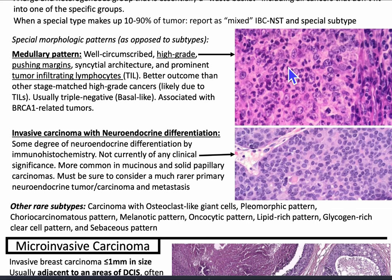Other special morphologic patterns include invasive carcinoma with neuroendocrine differentiation, which is also seen by IHC. Not currently of any clinical significance. It's more common in mucinous and solid papillary carcinomas, and you must be sure to consider a much rarer primary neuroendocrine tumor, carcinoma, and/or metastasis. The histologic features of neuroendocrine differentiation include salt-and-pepper chromatin.